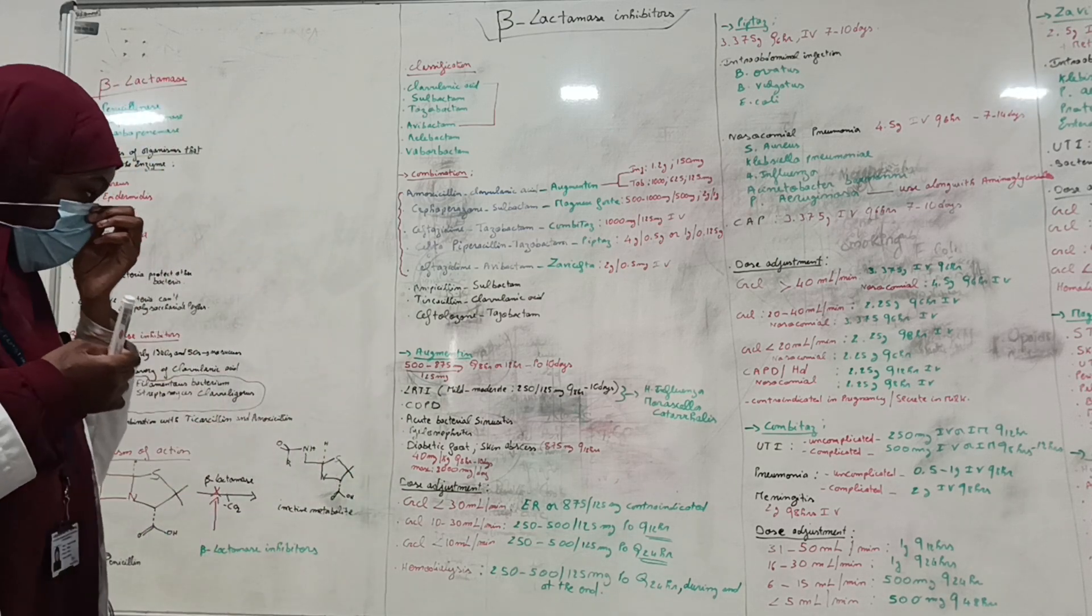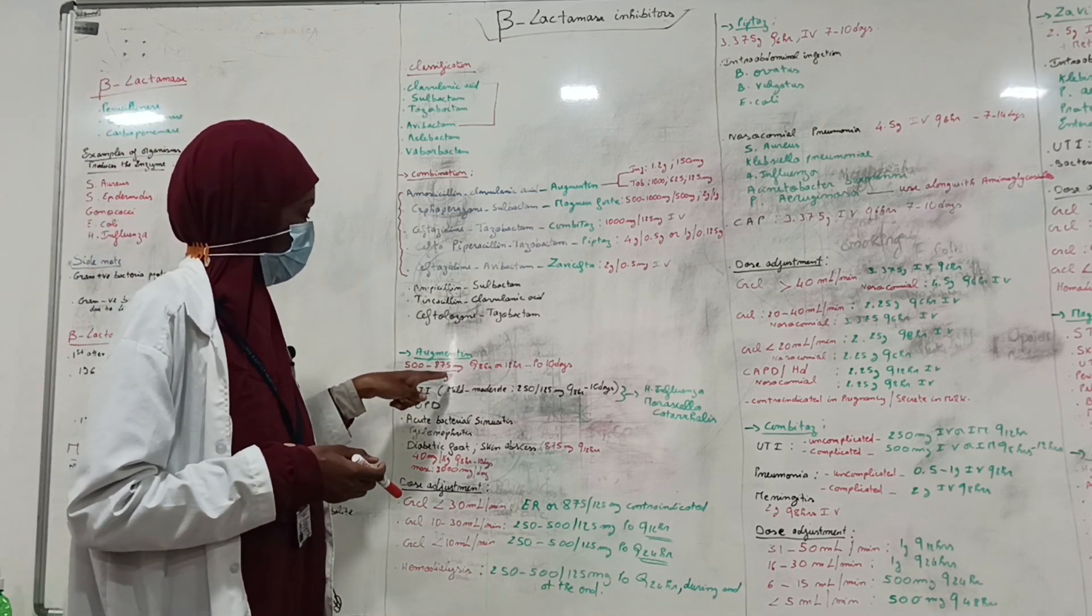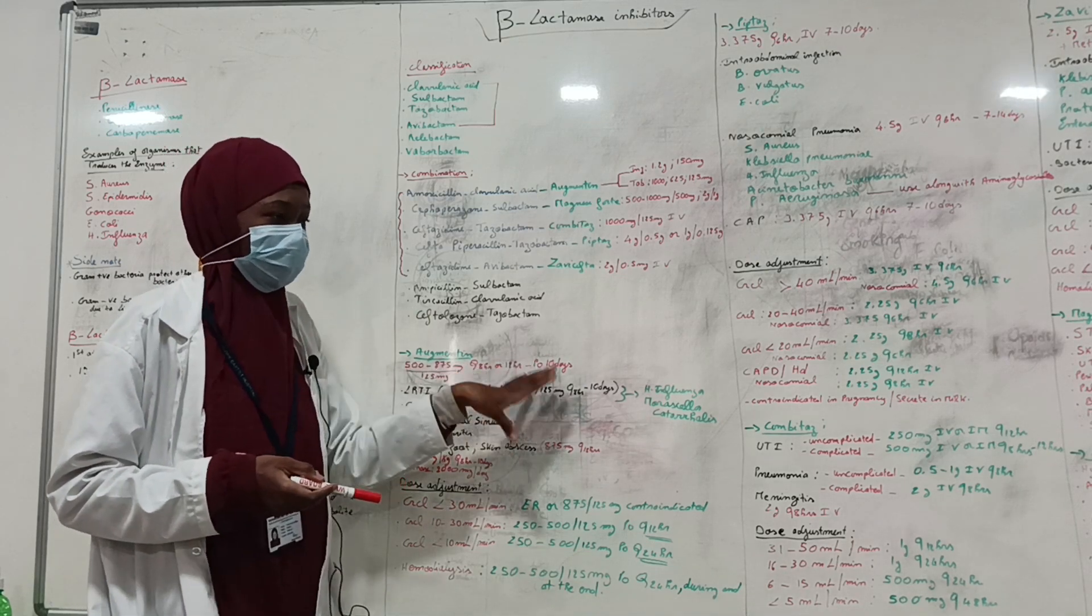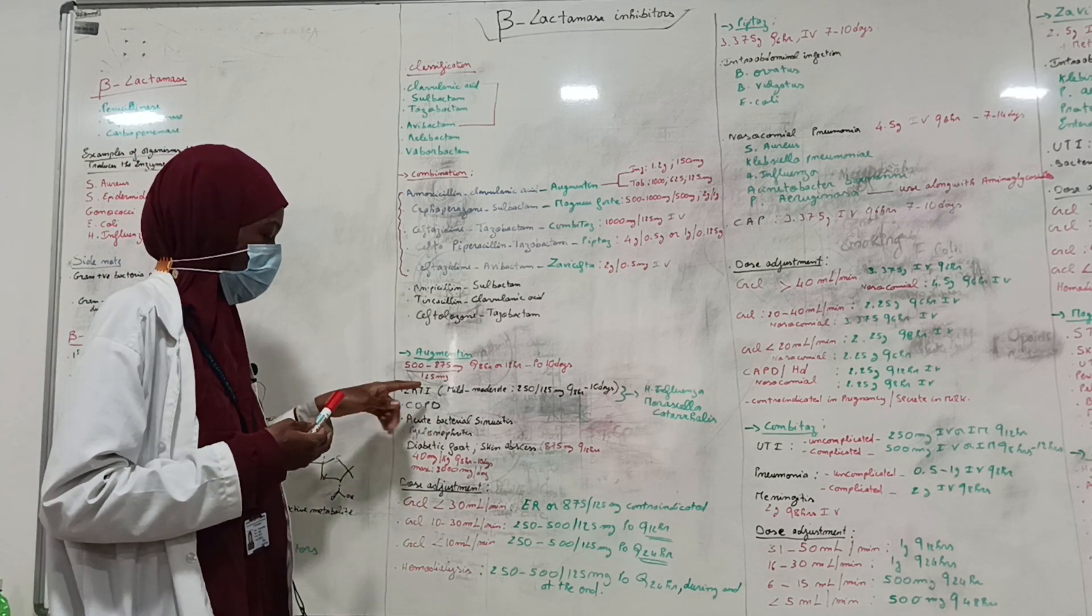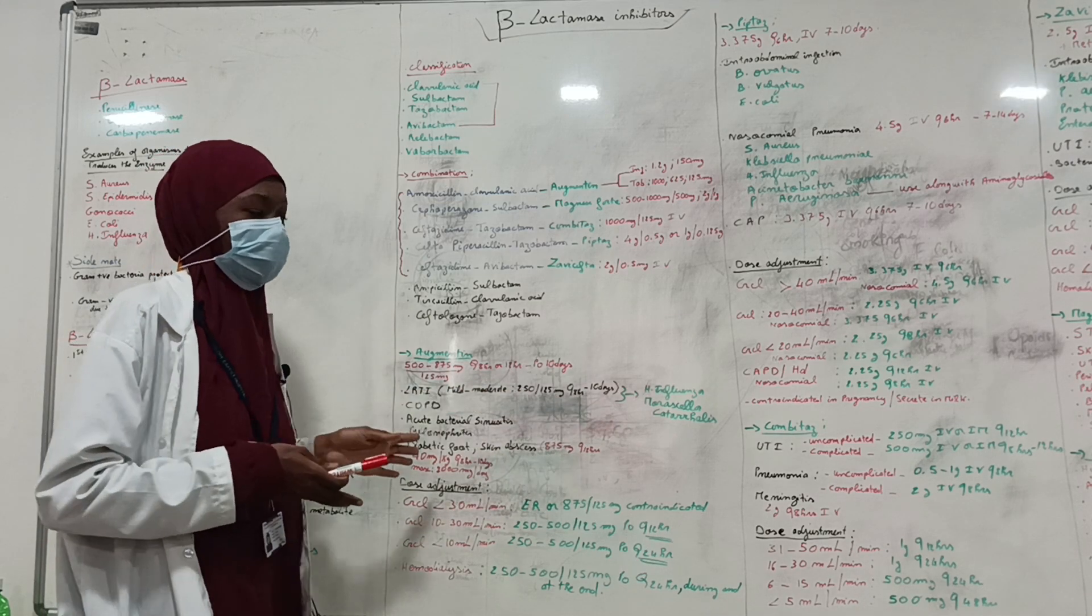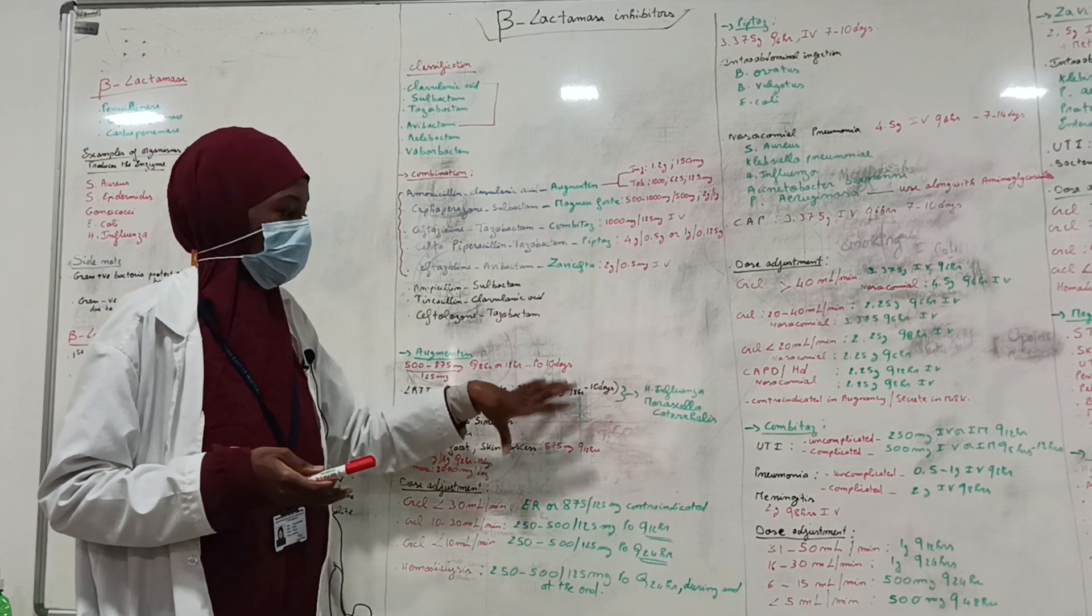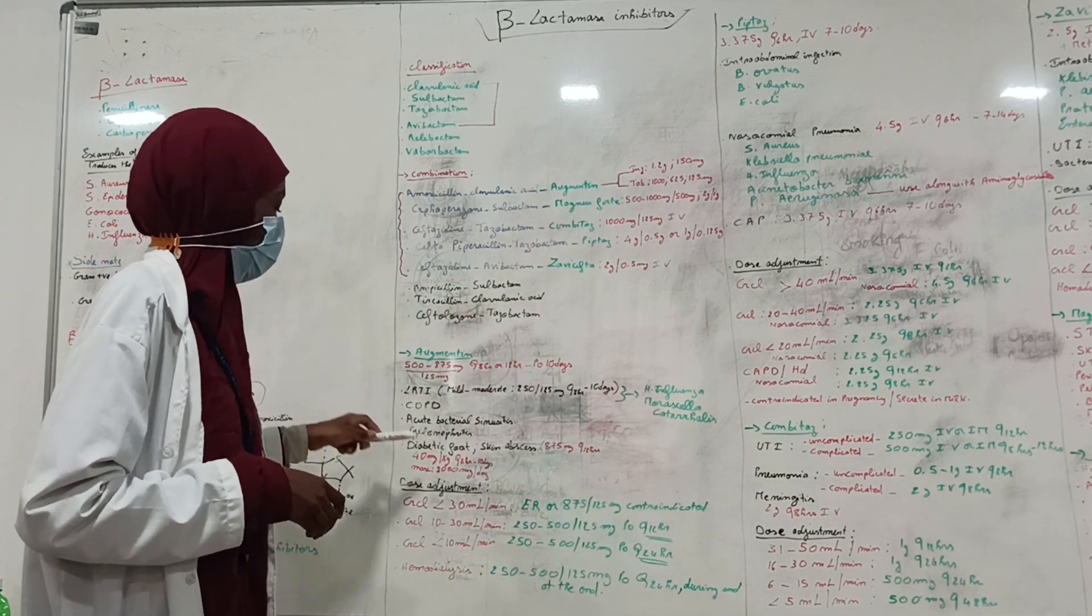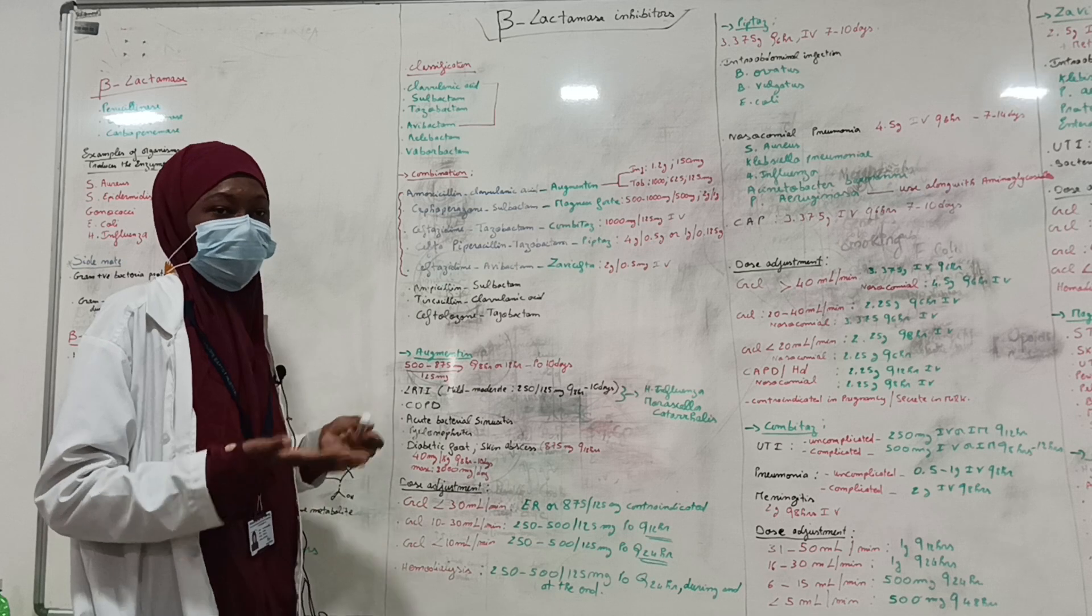Let's see the combinations one by one. Augmentin: at a dose of 500 to 875 mg by 125 mg, every 8 hours or 12 hours for duration of 10 days, it is indicated for lower respiratory tract infection. But when the infection is mild to moderate, a dose of 250 by 125 mg every 8 hours for 10 days is recommended. Also for COPD, infections caused by organisms like H. influenzae and Moraxella catarrhalis. Also for acute bacterial sinusitis, same dose, and pyelonephritis.